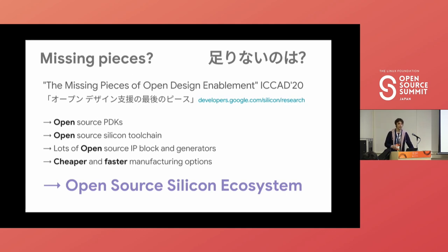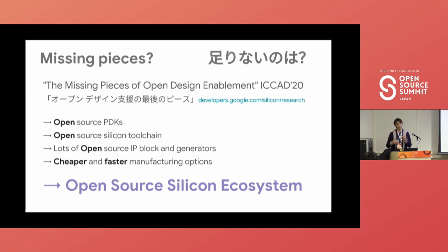Those four missing pieces are: first, an option to have open source PDKs. Currently, when people want to manufacture custom silicon, they need to sign an NDA with the foundry — it's not like an API you can look up on the internet. Most tooling for designing custom silicon is proprietary, which handicaps people's capability to run this software wherever they want. If they want to run it on their laptop, they usually need a work license; at a university, it's often restricted to a single computer; and running it on the cloud on thousands of VMs is not possible with a workstation license.